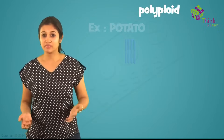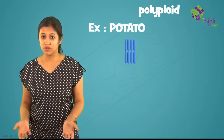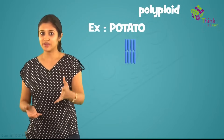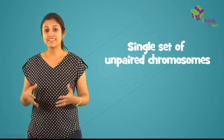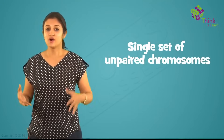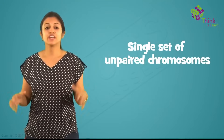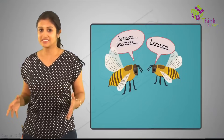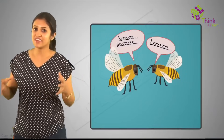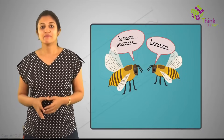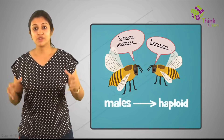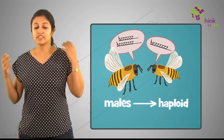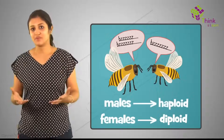Some organisms have more than two pairs of each chromosome and these are called polyploid, because poly means many. Some plants like potatoes are polyploid. When there is a single set of unpaired chromosomes, it's called haploid. Male bees, for example, develop from unfertilized eggs and are all haploid, while all female bees are diploid.